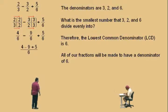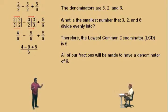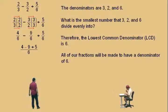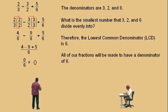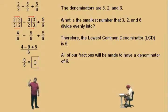We put a fraction bar over six and do our arithmetic: four subtract nine plus five. Four subtract nine — don't get scared, use some kung fu. Nine subtract four is five, so four subtract nine is negative five. Negative five plus five is zero. Our numerator is zero and our denominator is six. Zero divided by six is zero, because six times zero is zero. If you have zero in the numerator and a non-zero number in the denominator, the answer is zero.